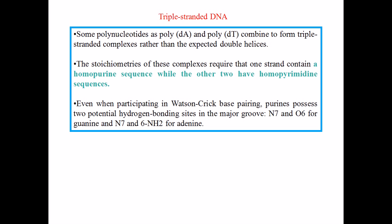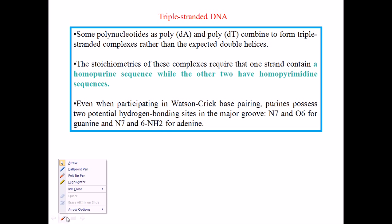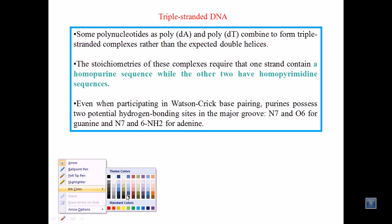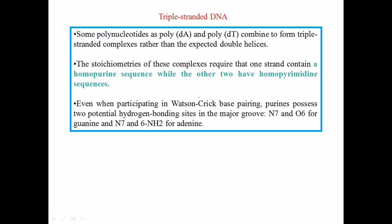Now we know that triple-stranded DNA can be formed by putting those bases on the inside and the backbone on the outside. But to make this kind of triple-stranded bond, what we need most importantly is a separate or different type of interaction between those bases, which we call Hoogsteen base pairing.